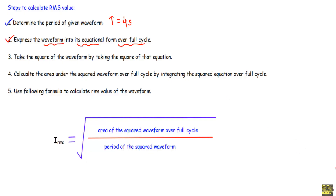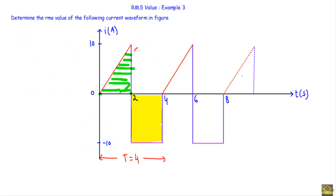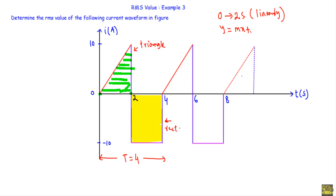After that, we will express the waveform into its equational form over the full cycle. This waveform consists of a triangle and a rectangle over the full cycle. As shown in my previous example, from zero to two seconds our current is increasing linearly, so we can express the current equation with a straight line equation y = mx + c. Since the y-intercept is zero, c will be equal to zero. On the x-axis we take time, and on the y-axis we take current i.